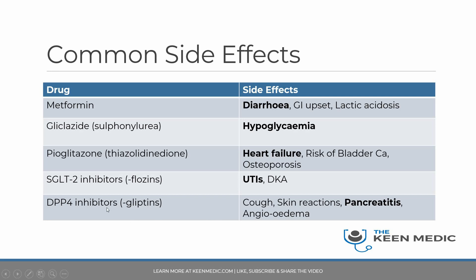Finally, the DPP-4 inhibitors — the gliptins — are often very well tolerated, which is why they feature last here. The most common issues they can cause include cough, skin reactions, possibly pancreatitis, and angioedema.